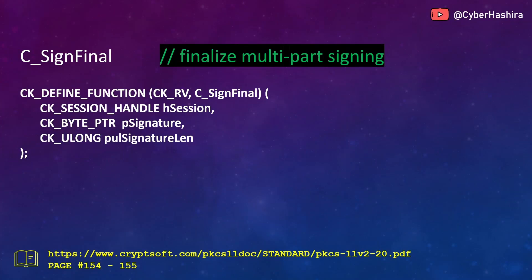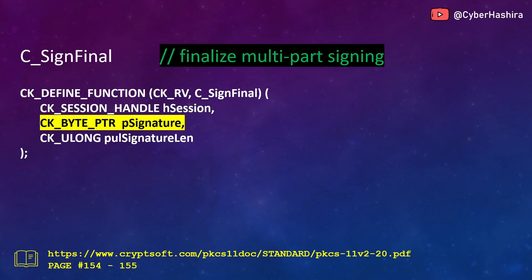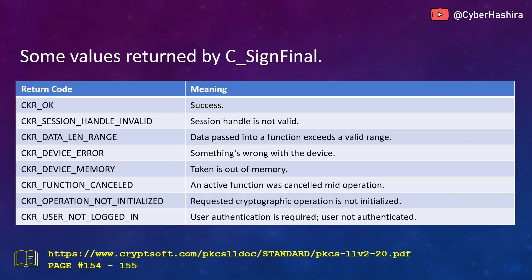The C_SignFinal function should be called to end or finalize a multi-part signing operation. This function will process and return a signature. The first argument is a session handle number. The second argument is the location where the signature will be returned. The third argument is the length of that signature. More information is available on pages 154 and 155.